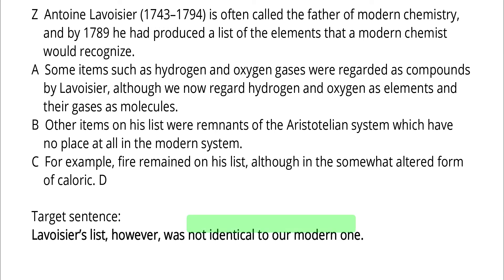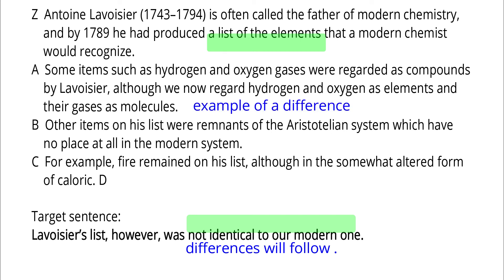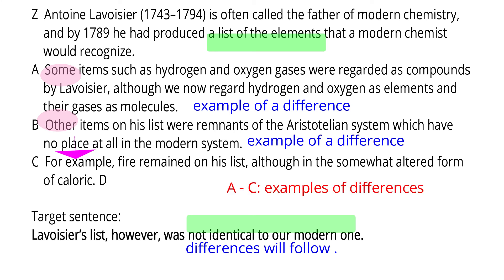The target sentence says Lavoisier's list is different from the modern list, so we can expect that some details of the differences will follow after the target sentence. The target sentence should come before the differences. Z says Lavoisier created a list of elements. A talks about instances of differences in Lavoisier's list and ours. B also talks about differences in the list, and B should come after A due to clue words 'some' and 'others.' C is an example of the mistake mentioned in B, so C should come after B. A through C talk about the differences, so the target sentence should come before A.